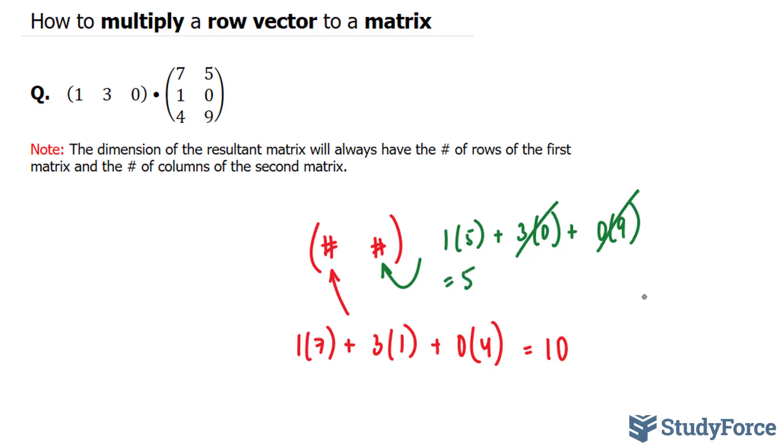Your matrix will end up looking like this, 10 and 5. And that is how to multiply a row vector to a matrix.